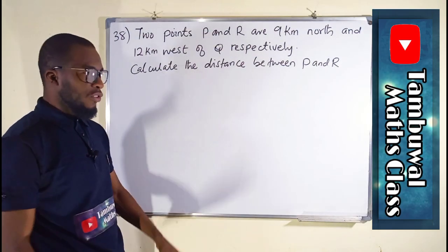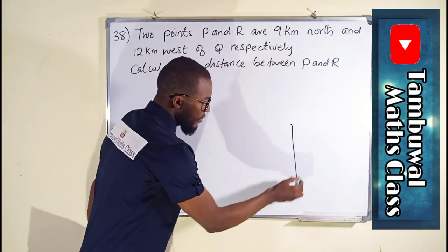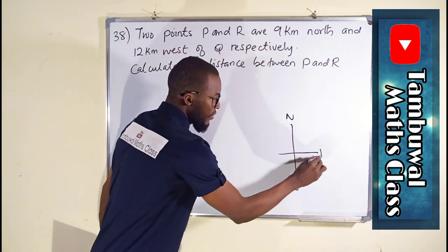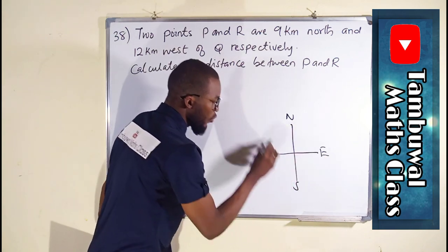First of all, let us draw our cardinal points. This is how it looks. This is north, this is south, this is east, and this is west.